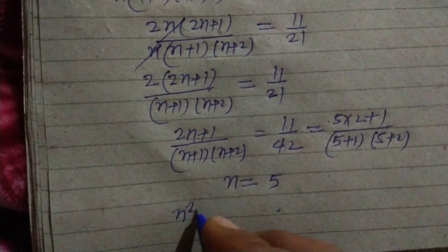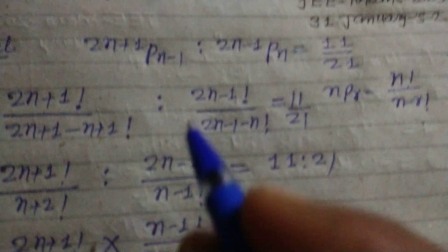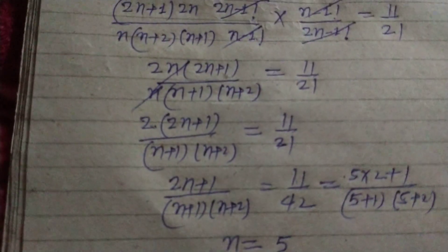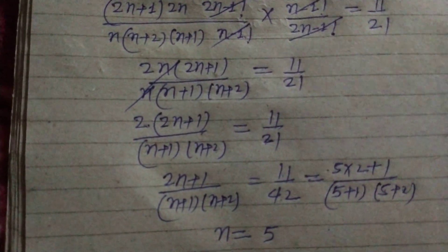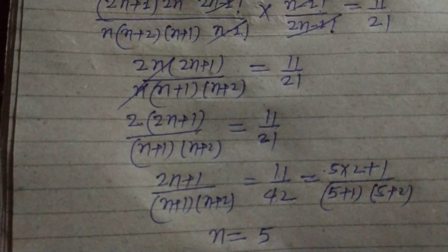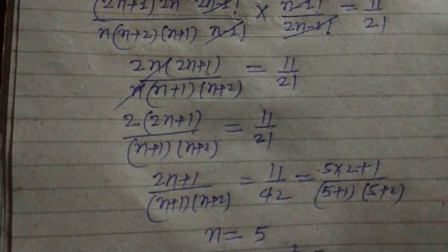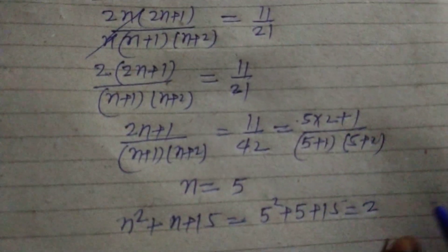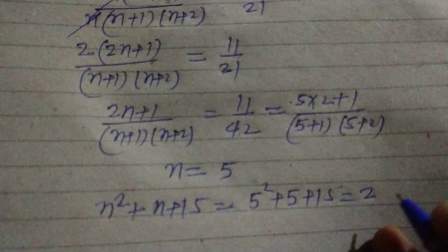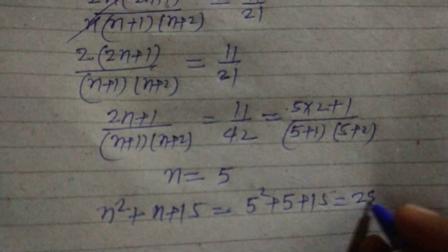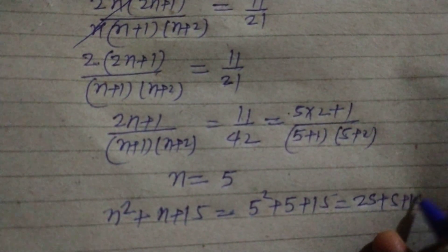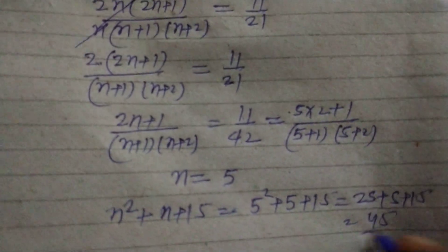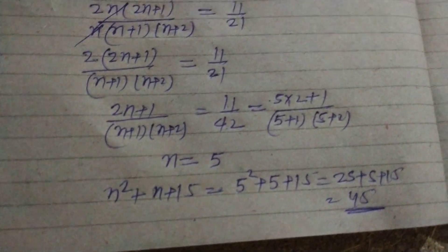Now we find n² + n + 15 with n = 5. This gives 5² + 5 + 15 = 25 + 5 + 15 = 45. So 45 is the answer to this question.